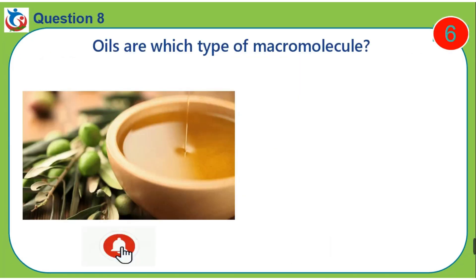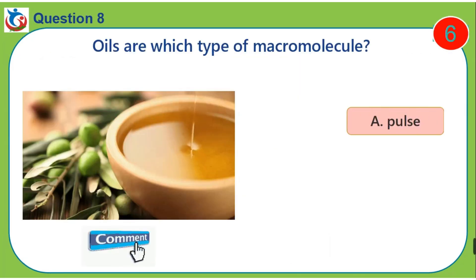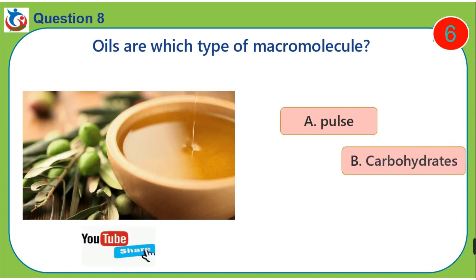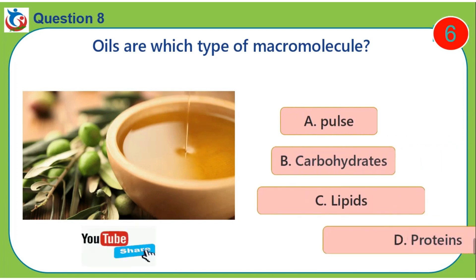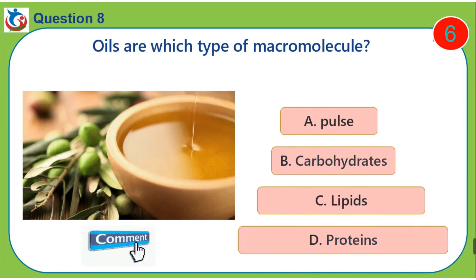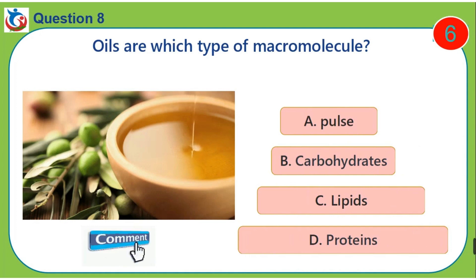Question 8. Oils are which type of macromolecule? A. Pulse. B. Carbohydrates. C. Lipids. D. Proteins.